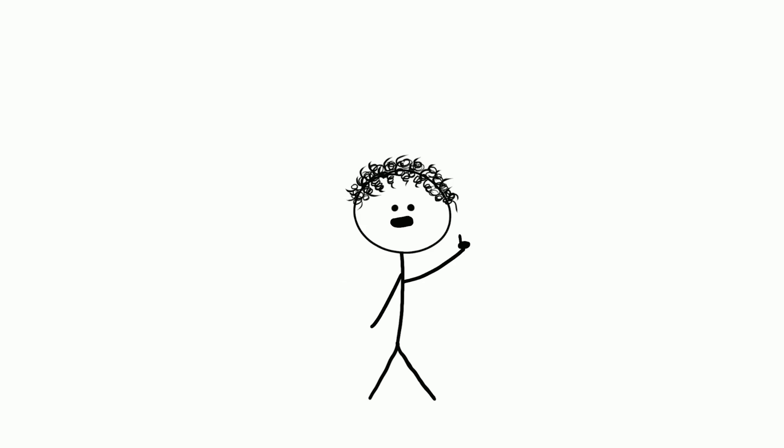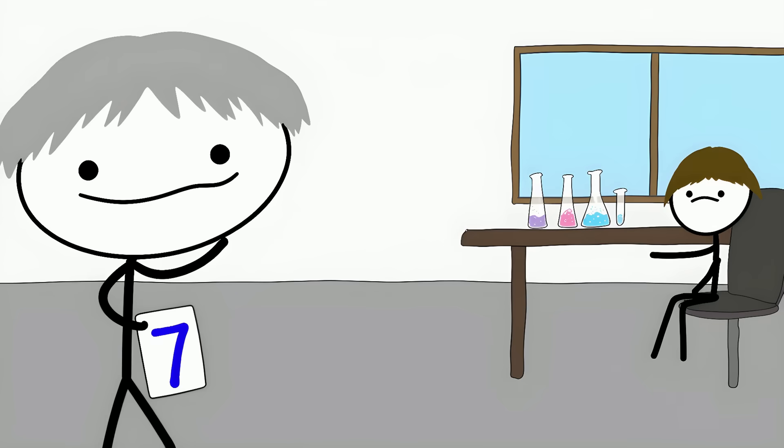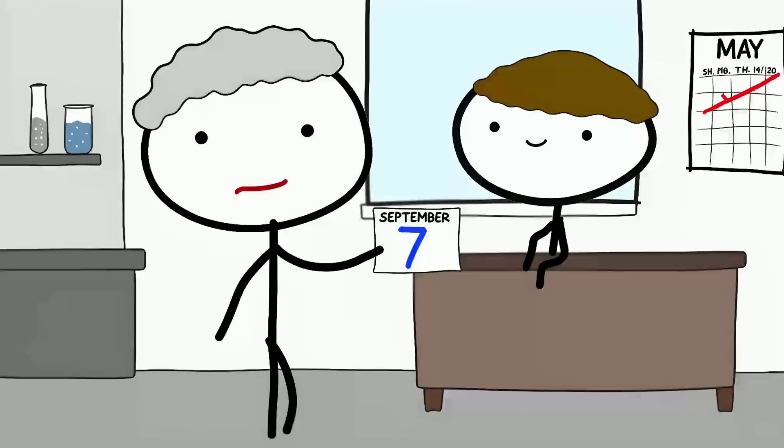These sensory crossovers aren't random. If the number 7 appears blue to someone with synesthesia, it will always be blue, every single time. Scientists tested this. Synesthetes shown the same things months apart always report the same cross-sensory experiences.